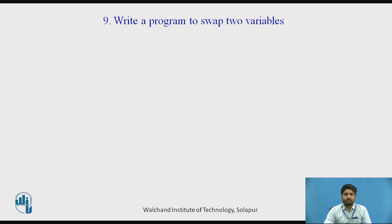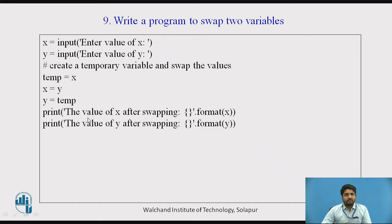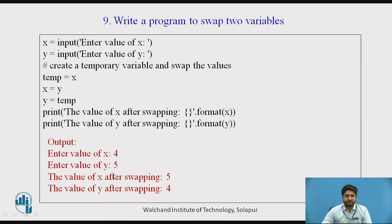Next, we will see a program to swap two variables. For swapping two variables, we need three variables: x, y, and one temporary variable. The x value is stored in the temporary variable, y is stored in x, and then the value in temporary is taken out into y. The output would be: enter the value of x as 4 and y as 5 — after swapping, the x value becomes 5 and the y value becomes 4.